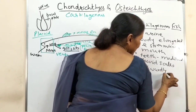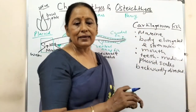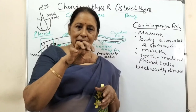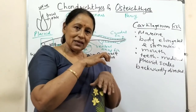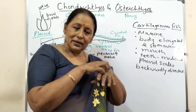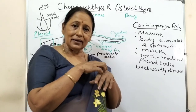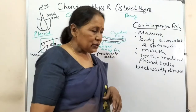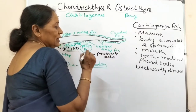The teeth are modified placoid scales and they are backwardly directed. This is also one of their weapons - when the prey tries to free itself, the backwardly directed teeth cause it to become even more entangled. So the teeth are modified placoid scales which are backwardly directed.